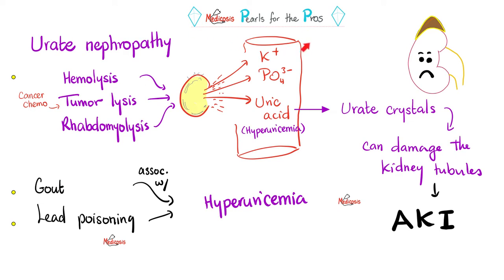Now for pearls for the pros: urate nephropathy, also called uric acid nephropathy. This can arise from gout, lead poisoning which increases the risk of hyperuricemia, or from various forms of cell lysis — hemolysis, tumor lysis, rhabdomyolysis. Any lysis of cells ruptures them, releasing their contents such as potassium, phosphate, and purines, which yield uric acid — because the cell nucleus contains DNA, which contains purines and pyrimidines. All that uric acid in the blood causes hyperuricemia, which can go to the kidney, damage it, and lead to precipitation of urate crystals — uric acid stones, which are rhomboid in shape under the microscope — causing acute kidney injury.